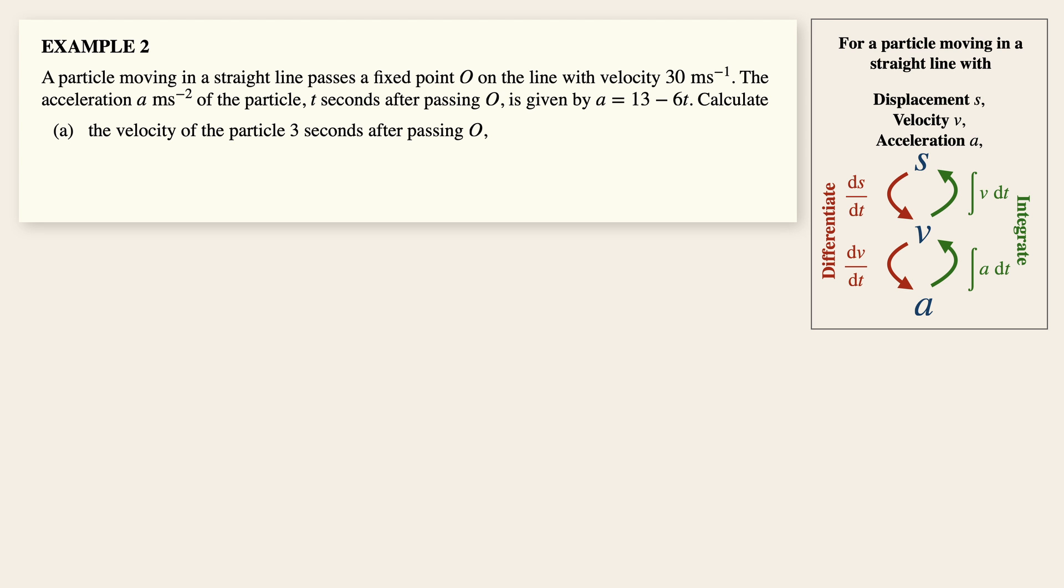Now calculate the velocity of the particle three seconds after passing O. Now again, always have this diagram in mind when you are doing kinematic related questions. Now to get the velocity, all we have to do is to first look for an acceleration or the displacement equation. Now for this question, we have the acceleration equation. So we can quickly integrate this expression with respect to t. Now v is then equals to 13t minus 3t squared plus c. Remember to include the arbitrary constant as this is an indefinite integral.